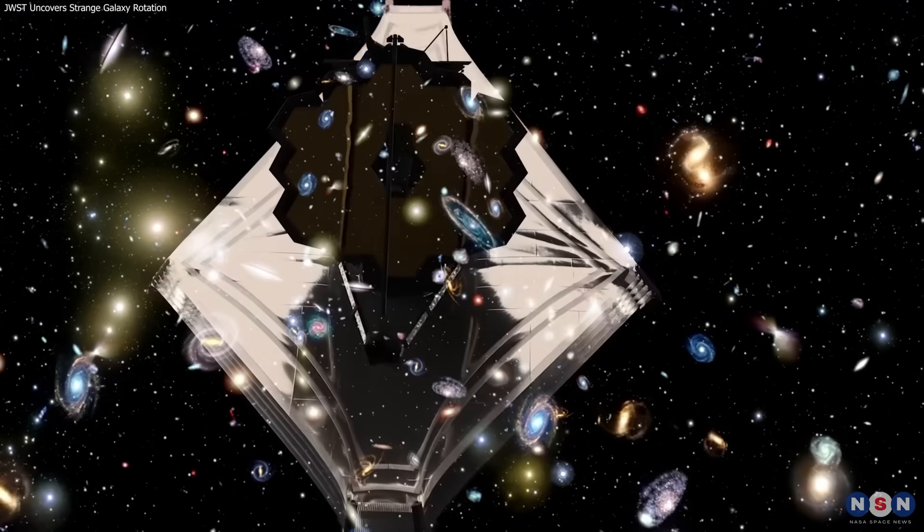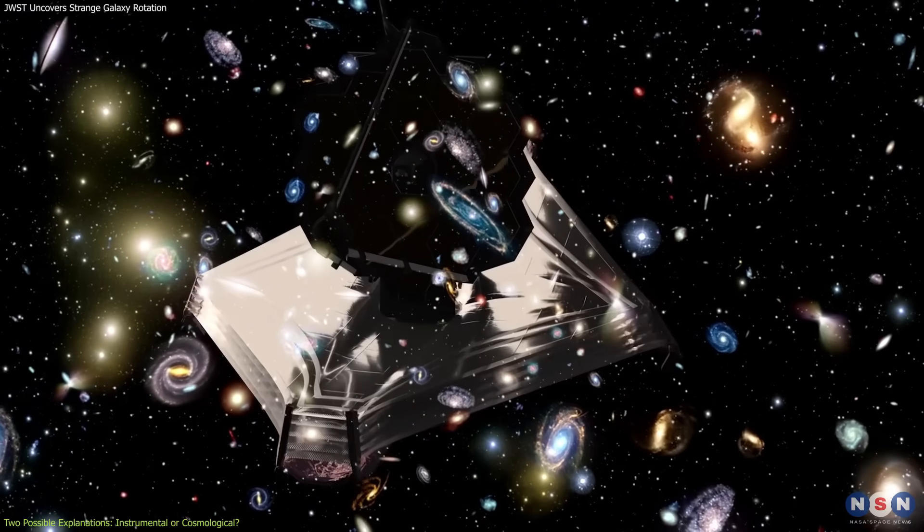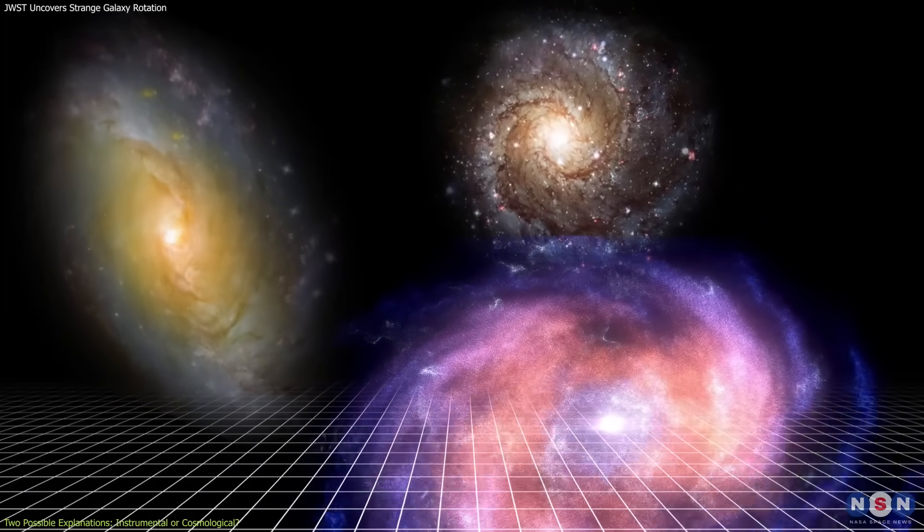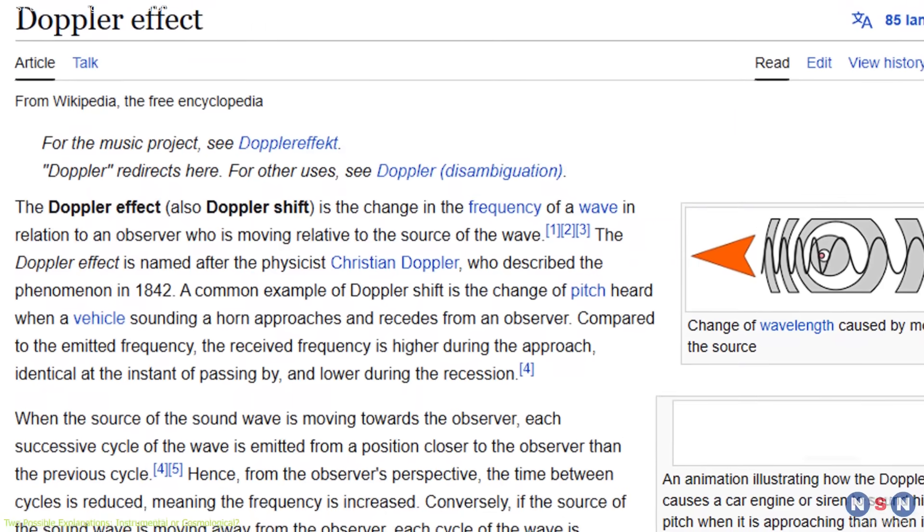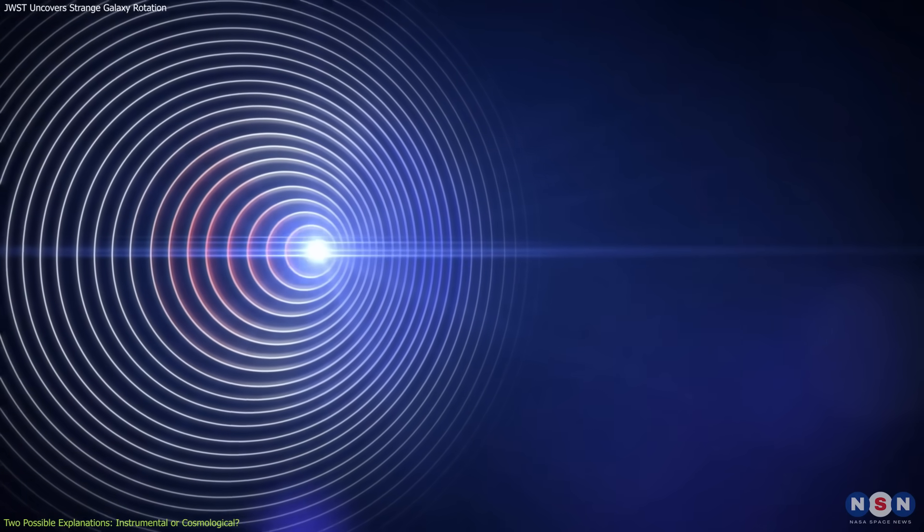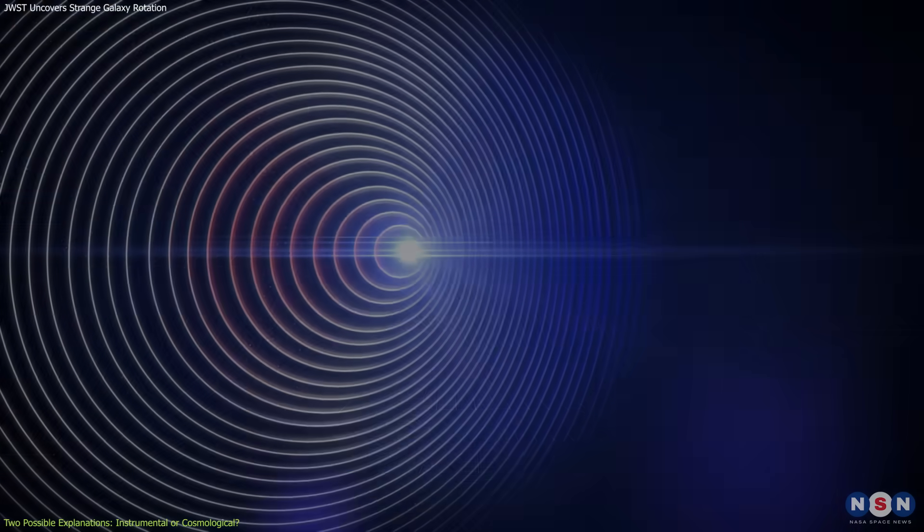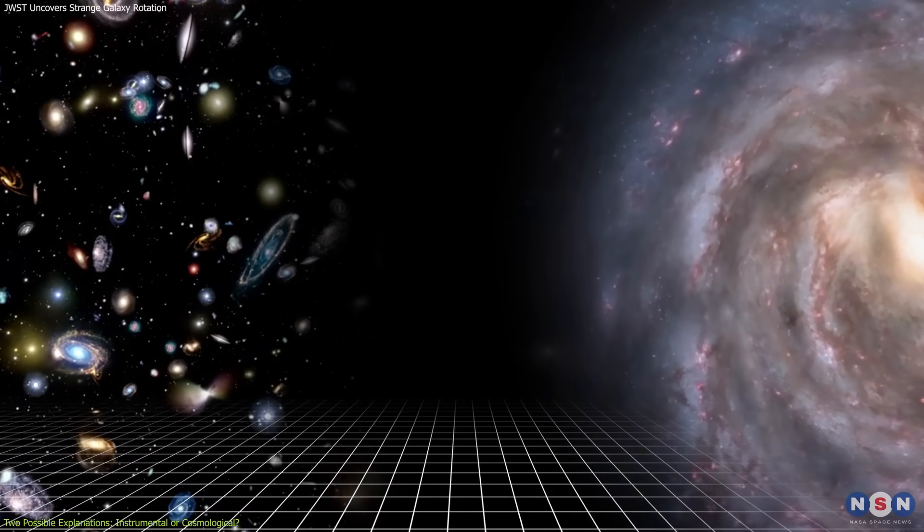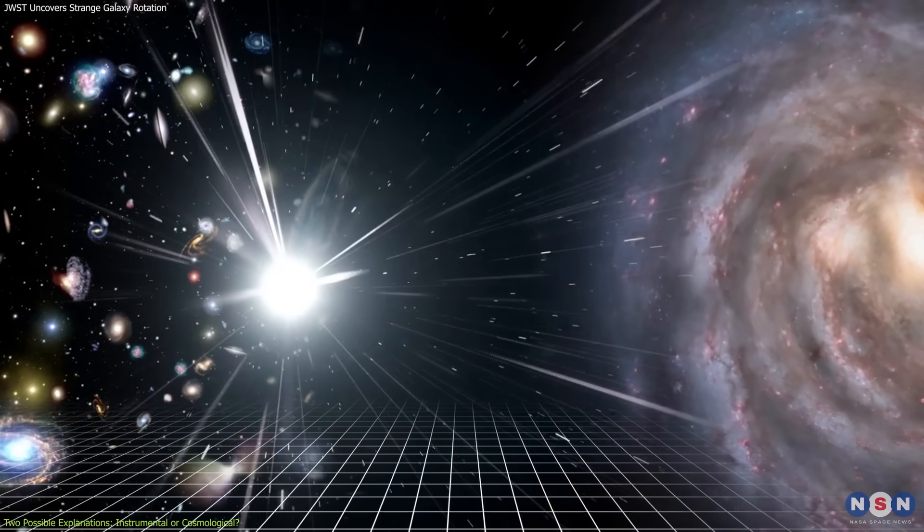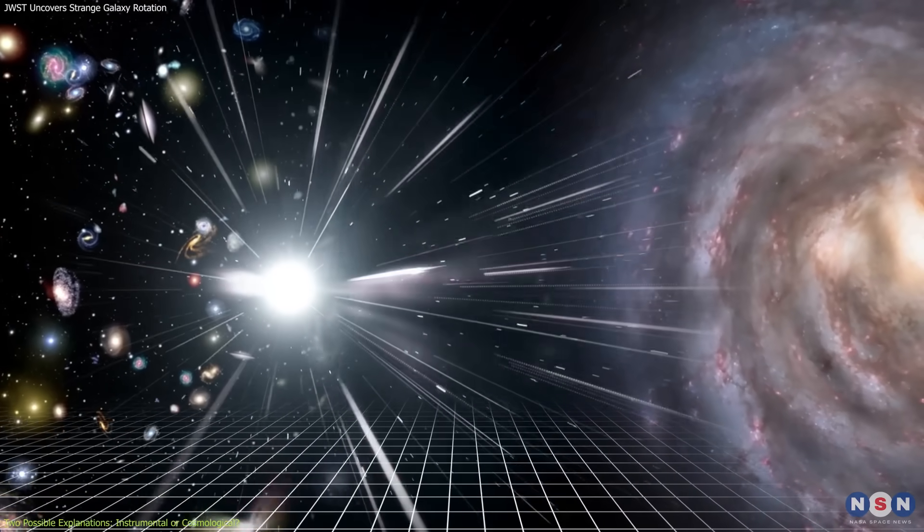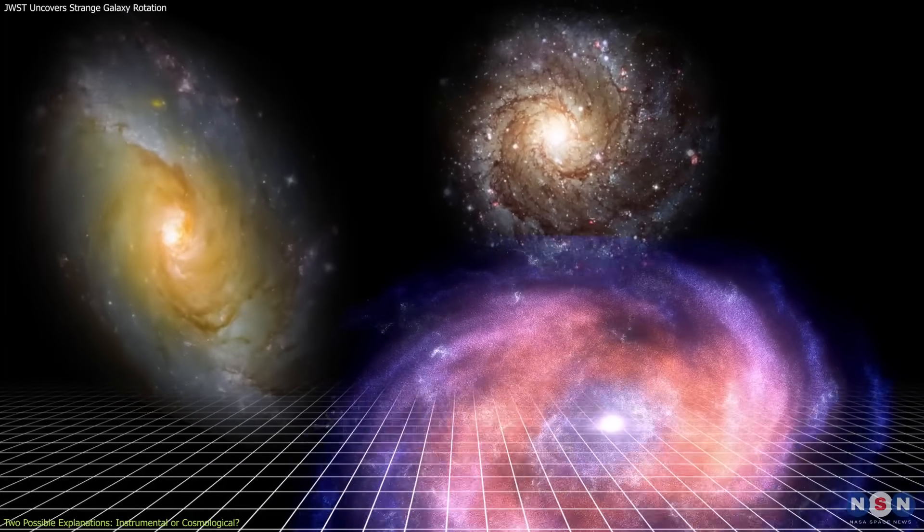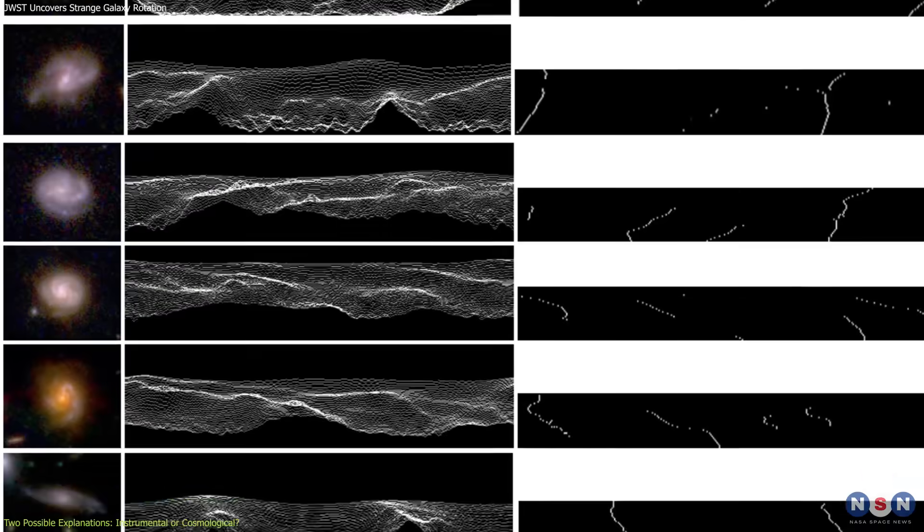The first and most cautious explanation centers on observational bias. Specifically, the way we're detecting and interpreting galactic spin may be affected by factors like the Doppler effect. This phenomenon shifts the frequency of light depending on the motion of the source relative to the observer. If our galaxy, the Milky Way, has a certain spin or motion relative to the region of space being observed, that motion could subtly affect how we perceive incoming light. Galaxies rotating in one direction might appear slightly brighter or clearer due to that effect, making them more likely to be catalogued.